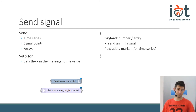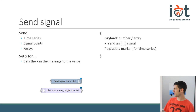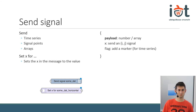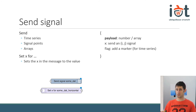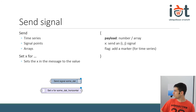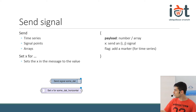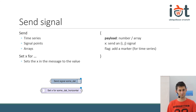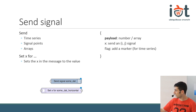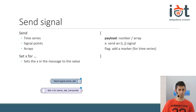There is a block called 'set x for some dot horizontal' — if you have a number and want to send a signal that is not a time series, you need an x component. Instead of writing a function, you can use this block. The block sets the value of x in the message to a variable from the global context. So it gets the value from the global context and puts it on the x component.